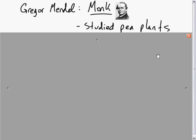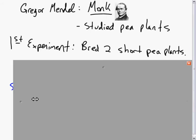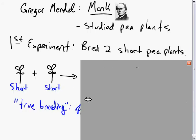He did a few experiments with pea plants. In his first experiment, he took two short pea plants and bred them together, as is shown here.